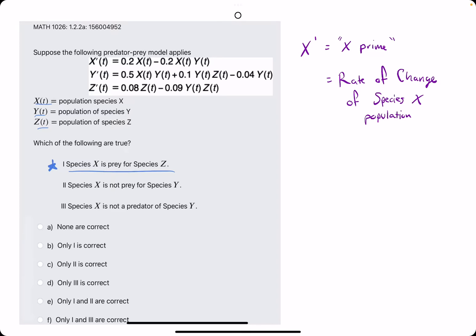They say species X is prey for species Z. In other words, X is related to Z, and Z is related to X. So the simple way to check if this is true, the first thing we want to check,